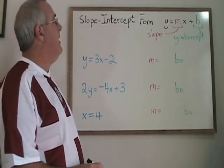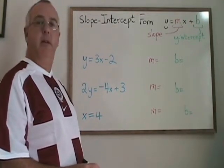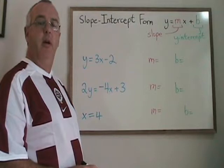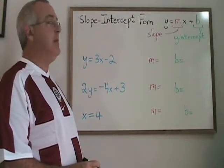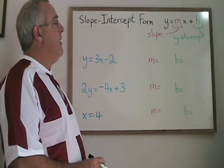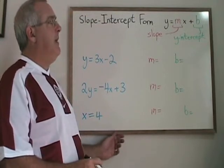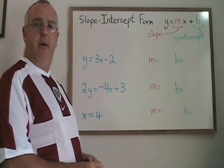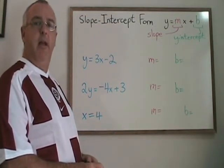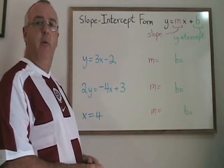y equals mx plus b is usually known as slope-intercept form for a straight line equation, although sometimes it is referred to as standard form. y equals mx plus b uses m as a variable to signify the slope and b as a variable to signify the y-intercept.